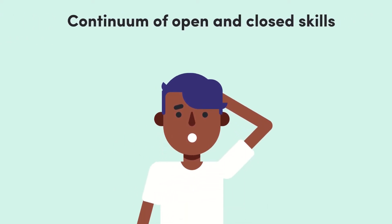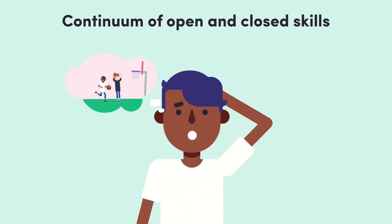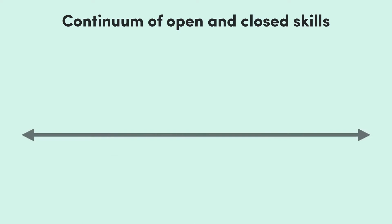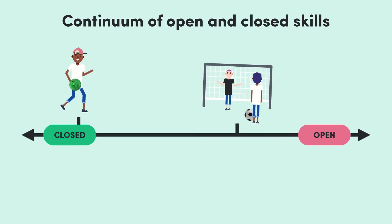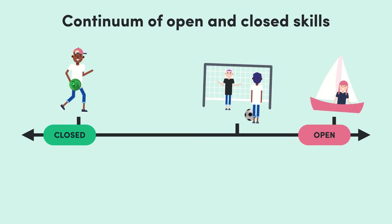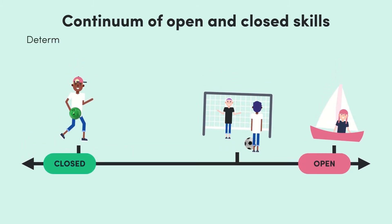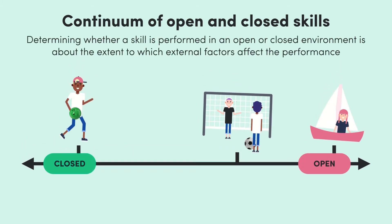You might be thinking that some sports are a little bit of both — and you'd be exactly right. Skills aren't strictly open or closed; they sit on a continuum. Bowling might be seen as an almost closed skill, somewhere further up we might have the penalty kick, and right at the top we might have something like sailing where you must be aware of heaps of external factors. It's all about the extent to which external factors affect how an athlete performs.